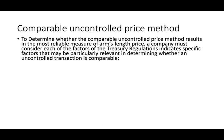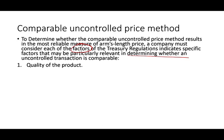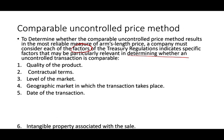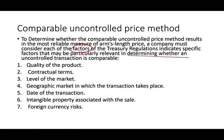To determine whether the comparable uncontrolled price results in the most reliable arm length price, a company must consider factors that the treasury regulation indicates are particularly relevant in determining whether an uncontrolled transaction is comparable. Here are some important comparability factors: the quality of the product, the contractual terms, the level of the market, geographical market in which the transaction takes place, the date of the transaction, intangible property associated with the sale, foreign currency risk, and alternatives realistically available to the buyer and the seller.